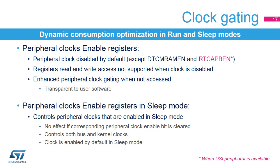The dynamic power consumption can be optimized by using peripheral clock gating. Each peripheral clock can be gated on or off in run and sleep mode, except SRAM and FLASH, which are always clocked in run and sleep modes. By default, the peripherals clock is disabled, except the DTC-MRAM clock and RTC interface clock, which are enabled by default. When a peripheral's clock is disabled, the peripheral's registers cannot be read or written. Dedicated registers allow for configuring the peripheral's clock during sleep mode.